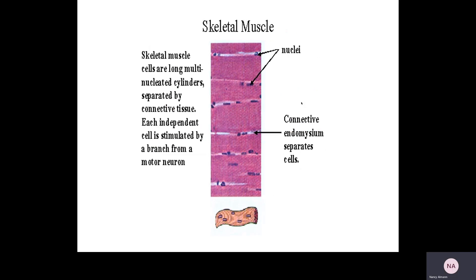Skeletal muscle cells are also known as muscle fibers, and I will use those terms interchangeably going forward. They are multinucleated and they are striated. If you look at the pictures posted, you will see bands of light and dark — those are striations. They are the reason that skeletal muscle and cardiac muscle contract so quickly and so well. Those striations are due to a very organized, repetitive pattern of protein myofilaments, both actin and myosin.